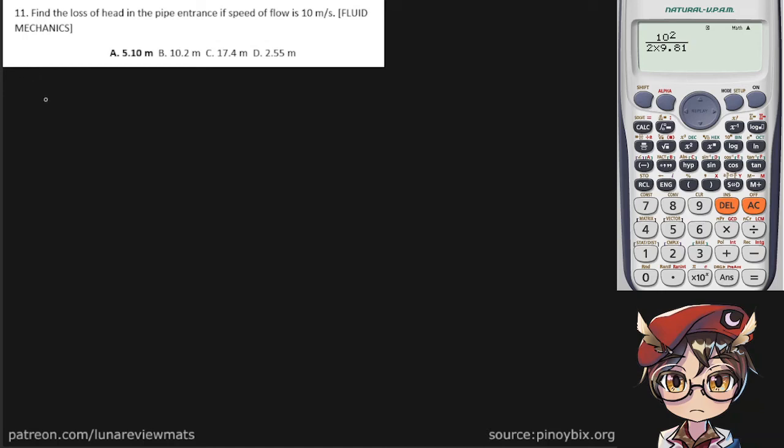Find the loss of head in the pipe entrance if the speed of flow is 10 meters per second. So first we write our given speed of flow 10 meters per second and we're being asked to find the loss of head h sub l in meters.